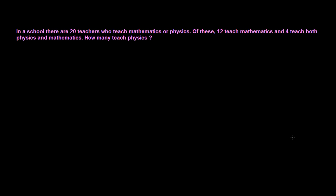Based on the same union formula, let's try to solve another question. In a school, there are 20 teachers who teach mathematics or physics. Whenever you get 'or', you should understand this is union. So mathematics union physics is 20. Of this, 12 teach mathematics, and 4 teach both physics and mathematics.